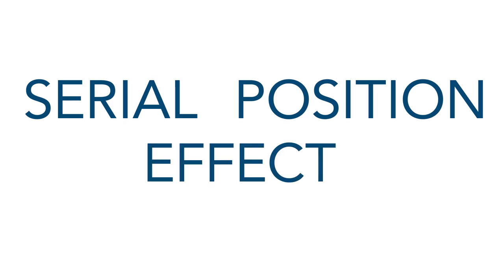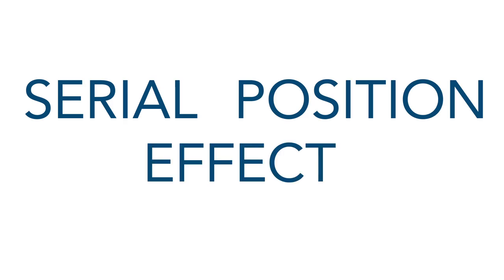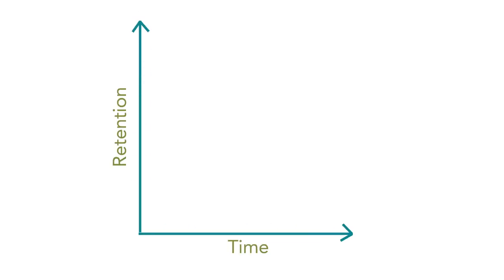One effective way to do this is to work with what is called the serial position effect, a term coined by the German psychologist Hermann Ebbinghaus in the late 19th century. Ebbinghaus found that when people take in information,